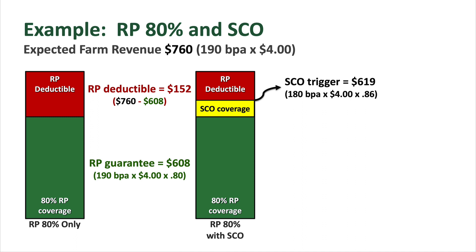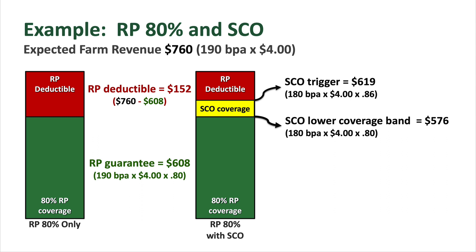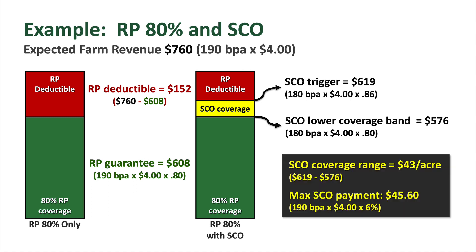The way they calculate SCO, they calculate that top band of coverage. The $619 county trigger is the top, and it stops at 80% coverage since that's the RP coverage this farm is buying — that lower band ends at $576. Subtracting the bottom band from the top band gives $43 of total county coverage they're purchasing. They also use your trend-adjusted APH of 190 on your RP policy to calculate your max payment: APH times $4 price times 6% SCO coverage equals a max SCO payment of $45.60.